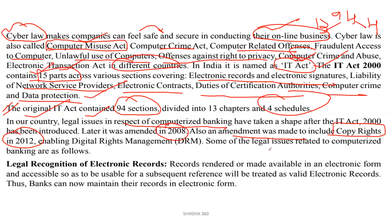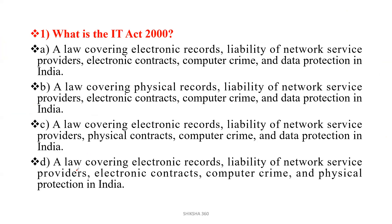Some of the legal issues related to computerized banking are as follows. Before moving further, let's discuss one or two questions. What is the IT Act 2000? The options are: a law covering electronic records, or a law covering physical records. You have to remember — it is electronic record, not physical record. So option B has to be wrong. We have to find either A, C, or D.